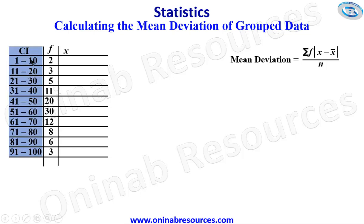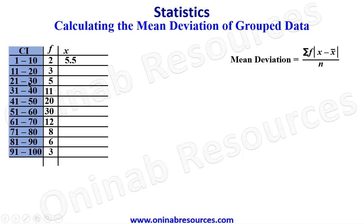To get the mid value of each class interval, we add the upper class limit and the lower class limit and divide by 2. So that gives us: 1 plus 10 divided by 2 gives 5.5; 11 plus 20 divided by 2 gives 15.5; 21 plus 30 divided by 2 gives 25.5.